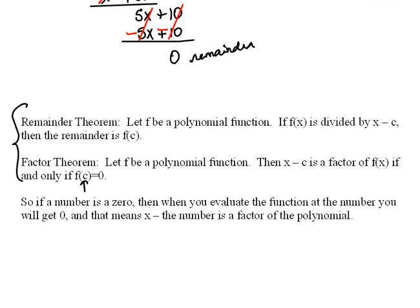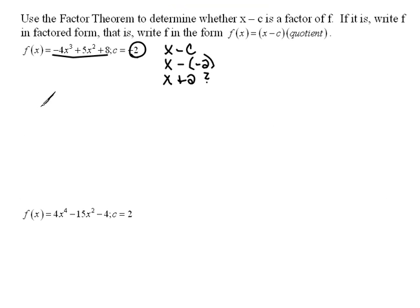We're going to use that. If I were to evaluate this function at that c value, then f of negative 2 would be negative 4 times negative 2 cubed plus 5 times negative 2 squared plus 8. Let's evaluate this. Negative 2 cubed would be negative 8, times negative 4 would be positive 32.